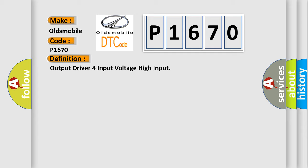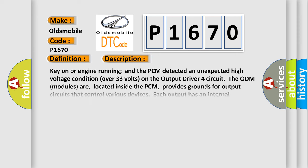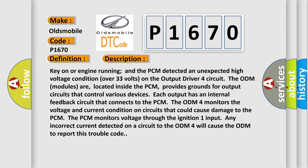Here is a short description of this DTC code. Key on or engine running, and the PCM detected an unexpected high voltage condition over 33 volts on the Output Driver Four circuit. The ODM modules, located inside the PCM, provide grounds for output circuits that control various devices. Each output has an internal feedback circuit that connects to the PCM. The ODM4 monitors voltage and current conditions on circuits that could cause damage to the PCM. Any incorrect current detected on a circuit to the ODM4 will cause the ODM to report this trouble code.